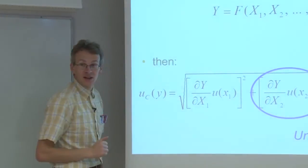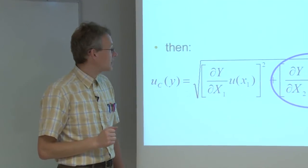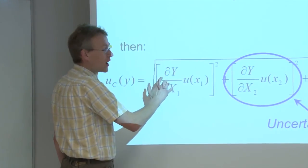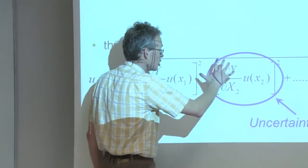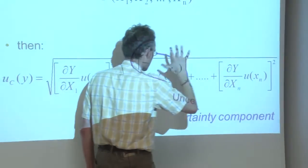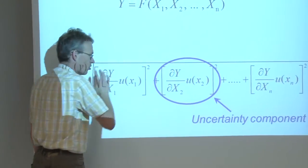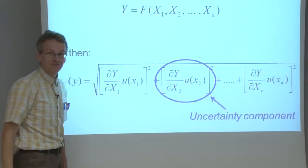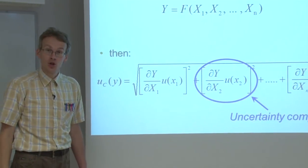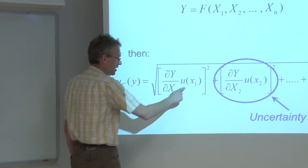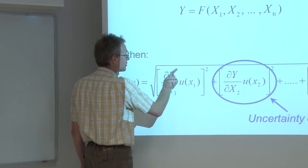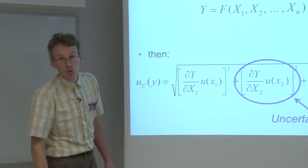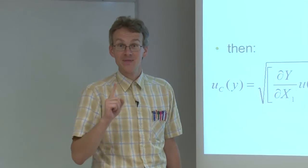the combined standard uncertainty of the output quantity is found from the square root of square summing of such uncertainty components. So each of these terms here is called uncertainty components of the respective input quantity. And each of them in turn is composed of the standard uncertainty of the input quantity and the partial derivative of the output quantity with respect to that input quantity.